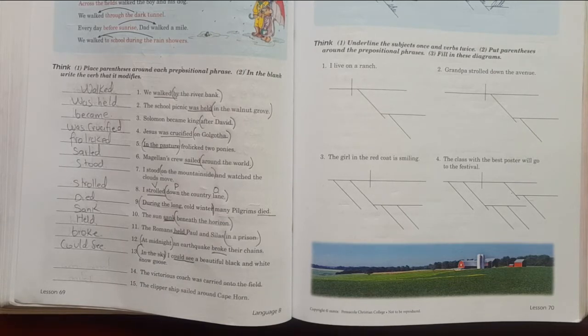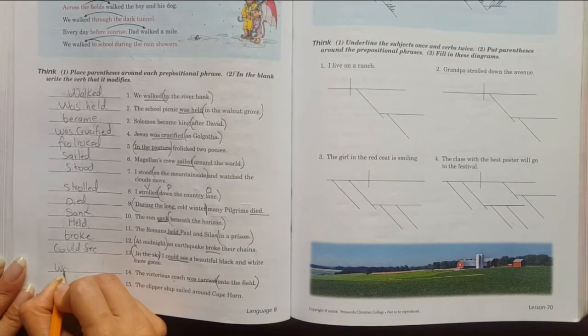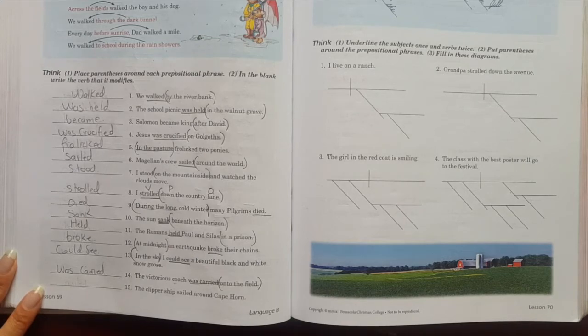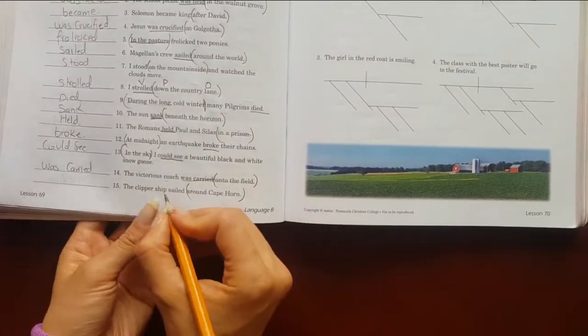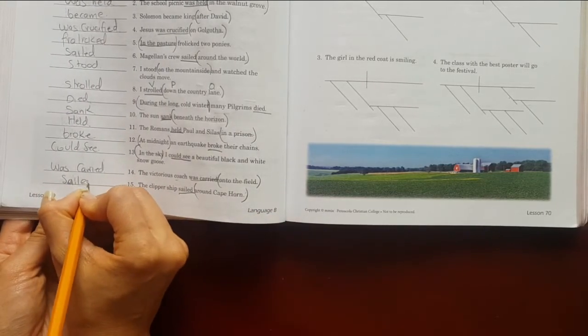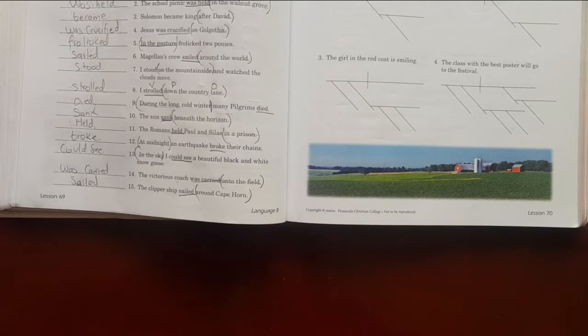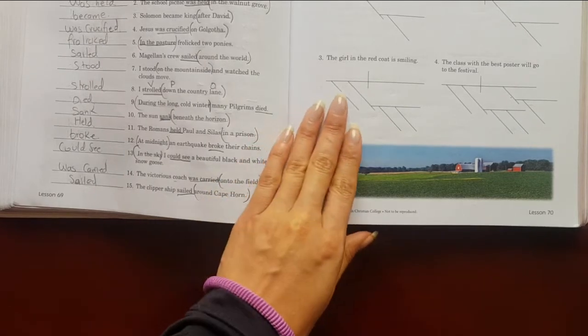Next: 'During the long cold winter, many pilgrims died' - 'died' is the verb. Number ten: 'The sun sank beneath the horizon' - 'sank' is the verb. Number eleven: 'The Romans held Paul and Silas in a prison' - 'held' is the verb. Number twelve: 'At midnight, an earthquake broke their chains' - 'broke' is the verb. Number thirteen: 'In the sky I could see a beautiful blank' - 'could see' is the verb. Number fourteen: 'The victorious coach was carried onto the field' - 'was carried' is the verb. Number fifteen: 'The clipper ship sailed around Cape Horn' - 'sailed' is the verb.